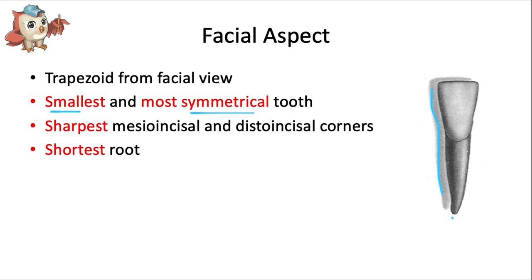That apex tends to point a little bit to the distal. It has the sharpest incisal corners of any tooth, both at around 90 degrees, and it also has the shortest of all the roots.